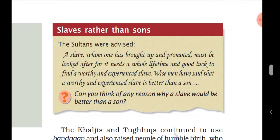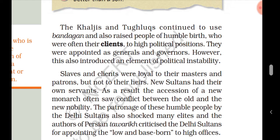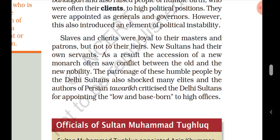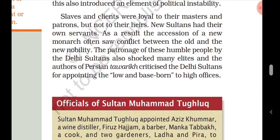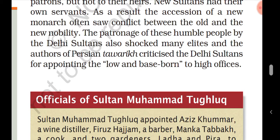The Khiljis and Tughlaqs continued to use bandagan and also raised people of humble birth to high political positions, appointing them as generals and governors. However, this introduced an element of political instability — slaves and clients were loyal to their masters and patrons, but not necessarily to the next sultan. As a result, the accession of a new monarch often saw conflict between the old and the new nobility.